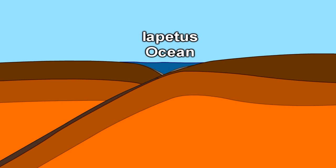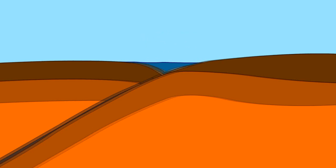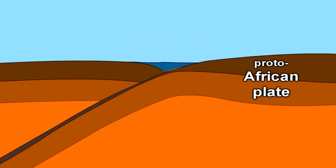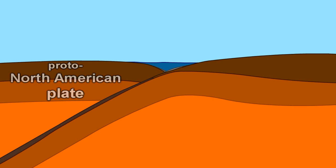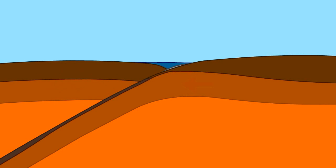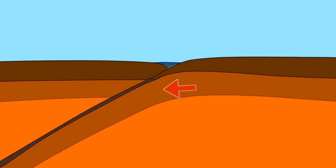During this time, the Iapetus Ocean was gradually decreasing in size, because the tectonic plate carrying the proto-African continent was converging with the proto-North American plate. The western leading edge of the proto-African plate bent down and subducted underneath the eastern edge of the proto-North American plate.